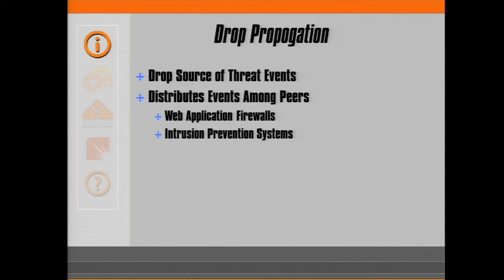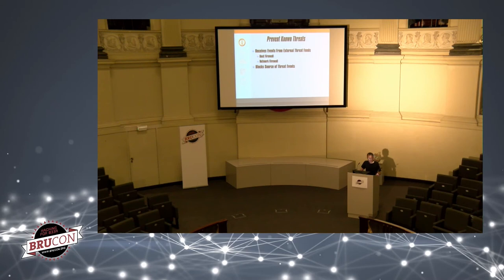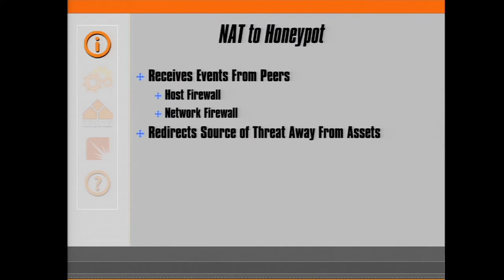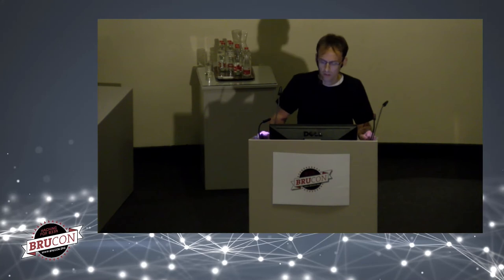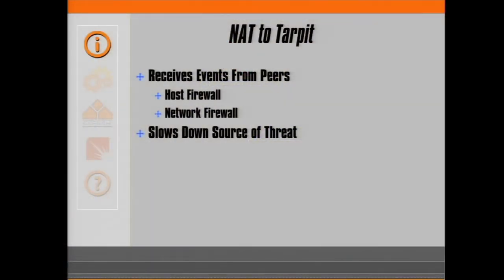Drop propagation: web application firewalls and intrusion prevention systems can distribute events among peers so that other WAFs and IPSs can also drop that threat. Prevent known threats: host firewalls and network firewalls receiving events shared with an external third party can block sources of threat events — there are lots of publicly available threat feeds. Now to honeypot: host firewalls and network firewalls can receive events from peers and redirect the source of the threat away from your assets into a honeypot. And they can optionally slow down the threat source by adding it to TARPIT, or any number of variations.